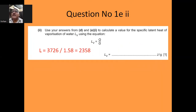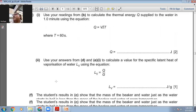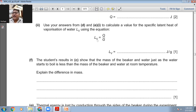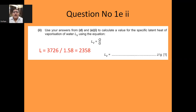Then: use your answer from D and E to calculate a value for the specific latent heat of vaporization of water using the equation LV = Q / G. The Q value we just calculated, and G is the gradient of the graph. So LV = 3726 divided by 1.58. The final answer is 2358 joules per gram.